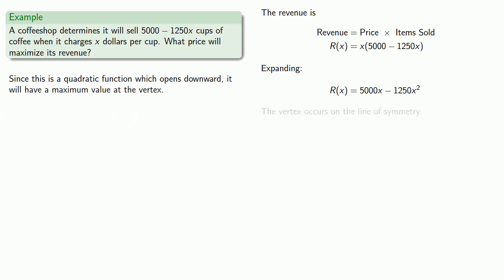The vertex occurs on the line of symmetry, so we'll find the line of symmetry, which is at 2. And so the vertex is at x equals 2.